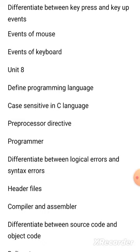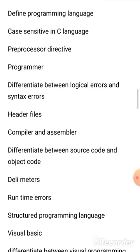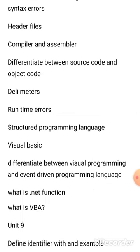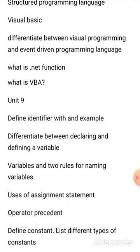Also from Chapter 8: what are header files, compiler and assembler, differentiate between source code and object code, what are delimiters, runtime errors, structured programming language, Visual Basic, differentiate between visual programming and event-driven programming language, what is .NET function, and what is VB.